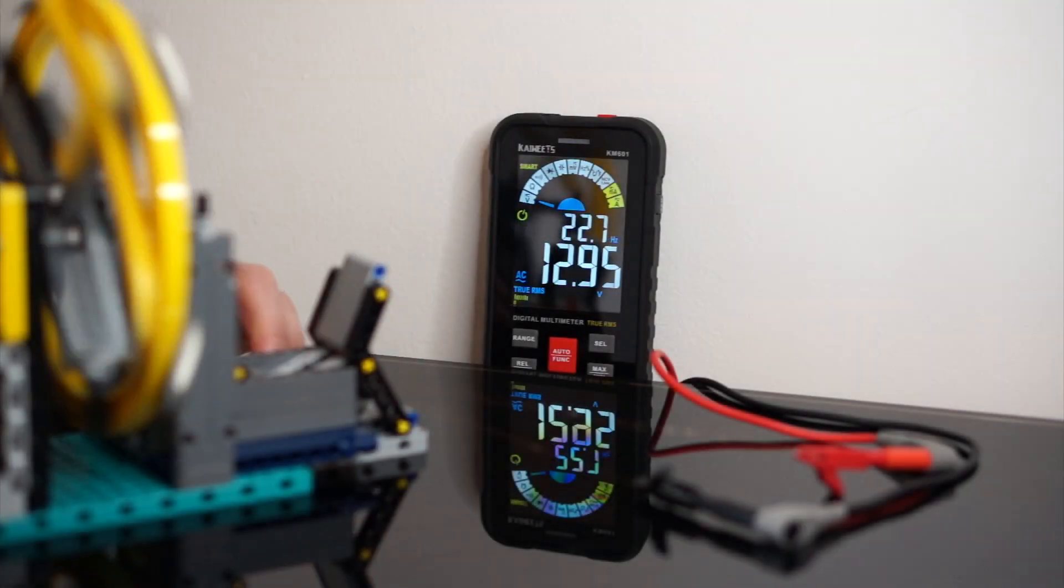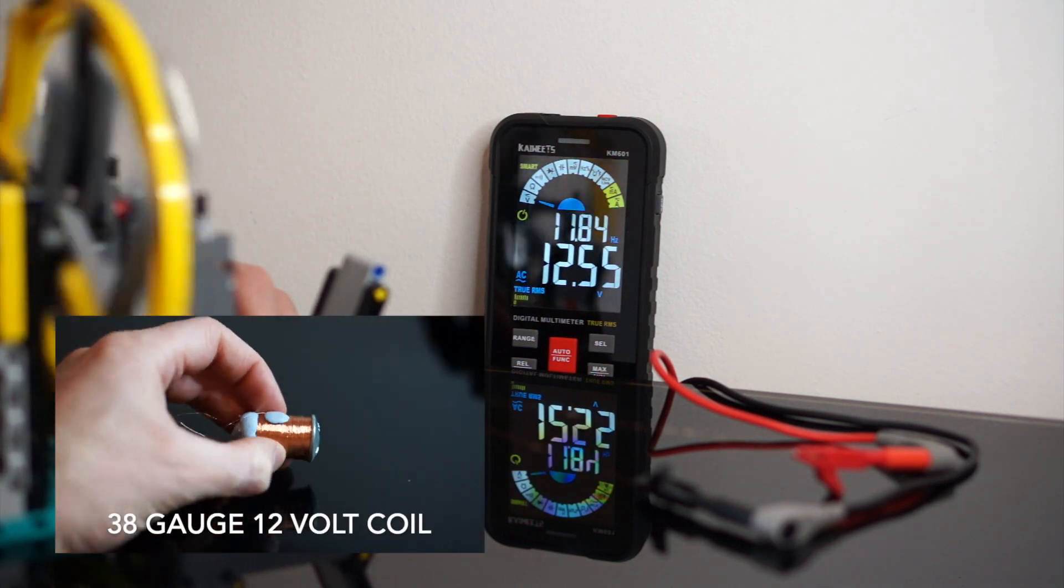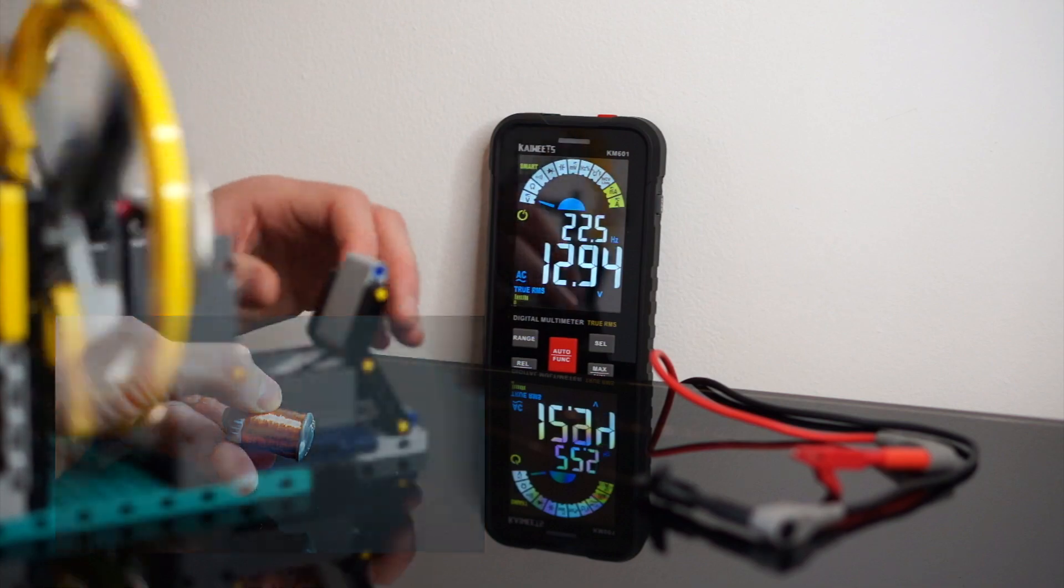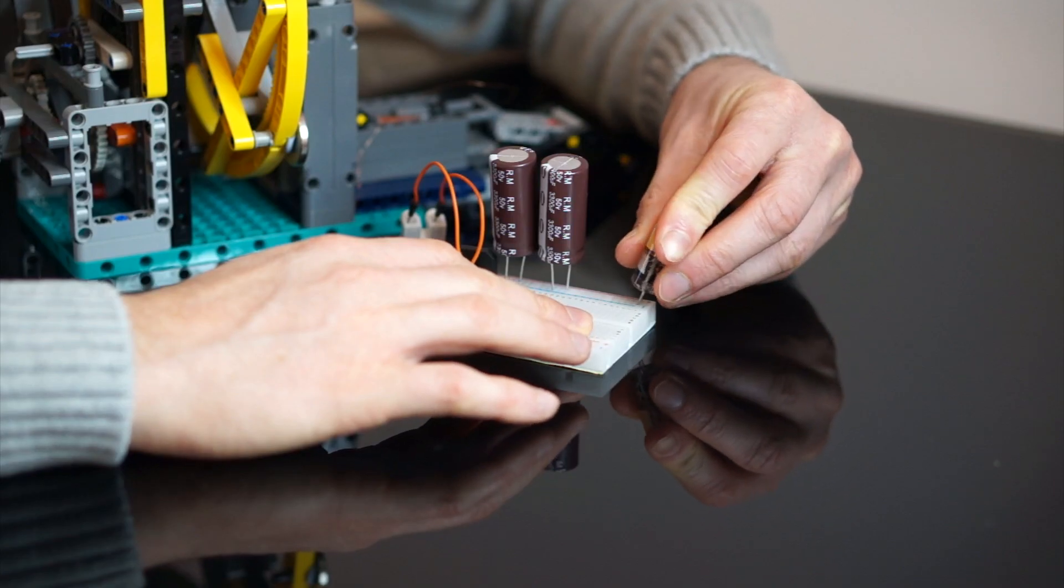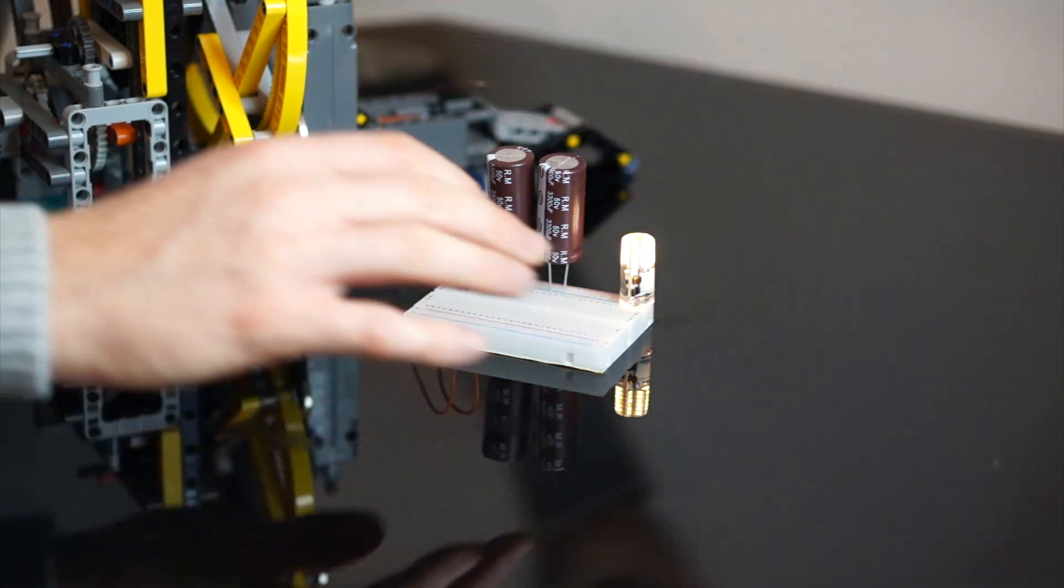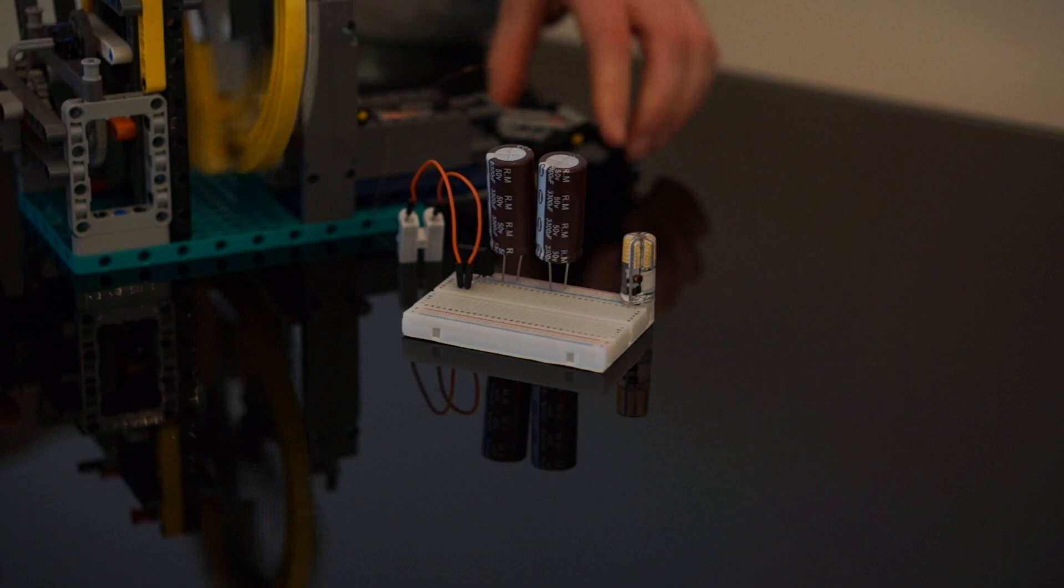And then finally out of interest I wanted to see if this thinner 38 gauge coil which generates around 12 volts is actually usable for lighting a 12 volt bulb. So I hooked it up to this 12 volt LED array with a couple of capacitors to smooth out the output. And once we spin it up, yup,